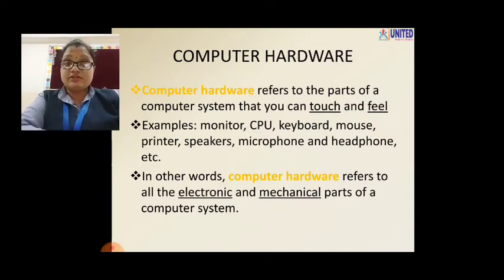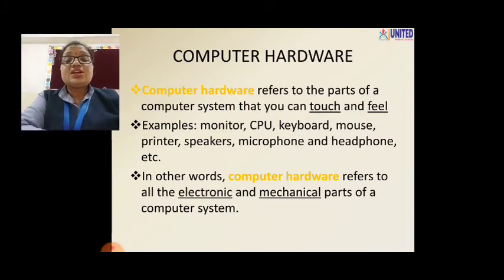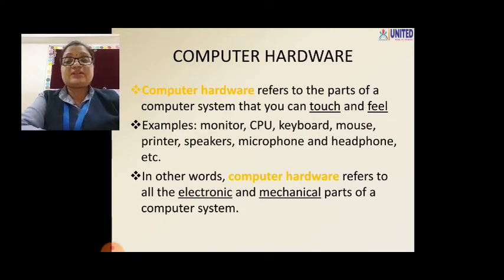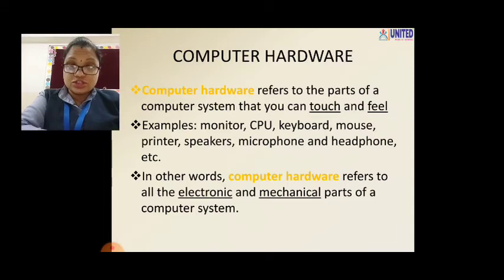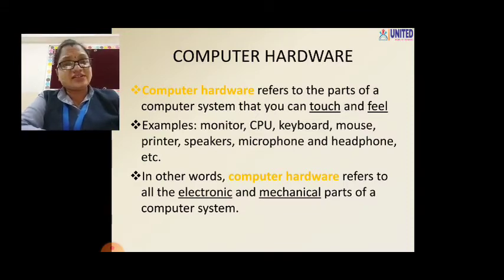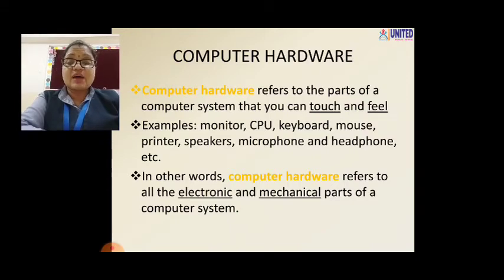In other words, computer hardware refers to all the electronic and mechanical parts of a computer system. Mechanical means the machine parts — like if you open a keyboard, there are electronic parts inside because without electricity you cannot use it. All hardware parts have wires to connect to the computer, so these are electronic and mechanical parts.